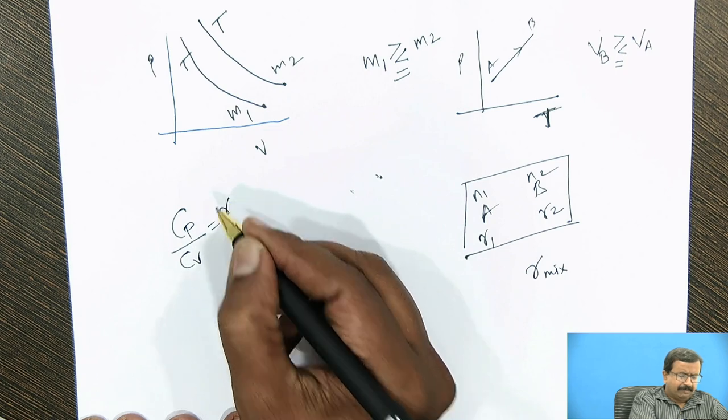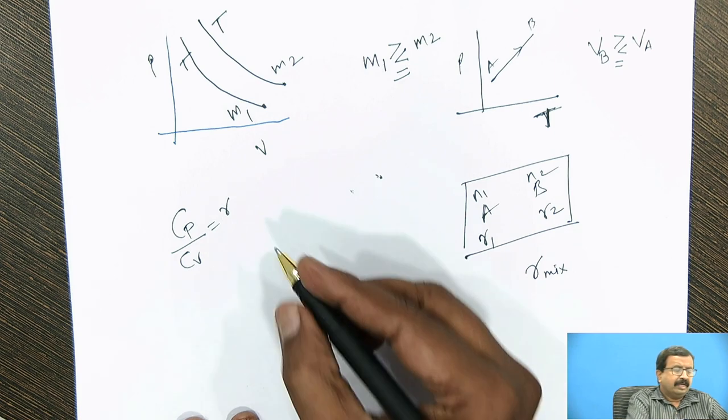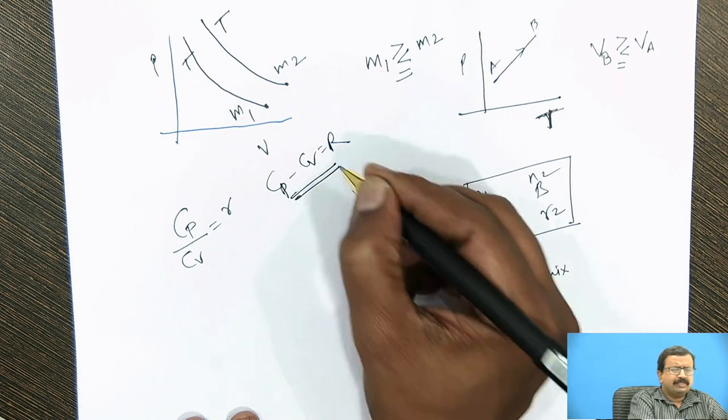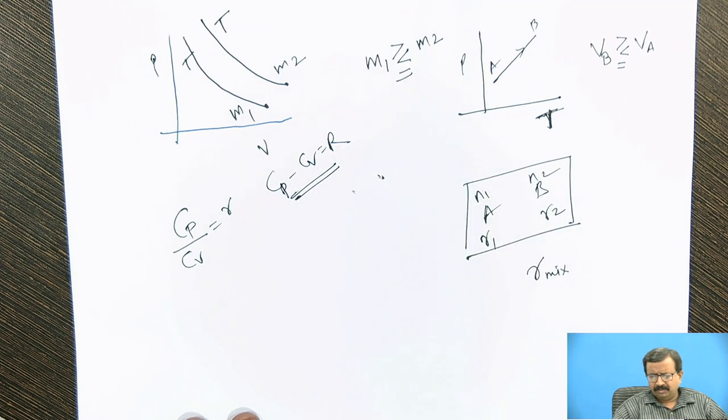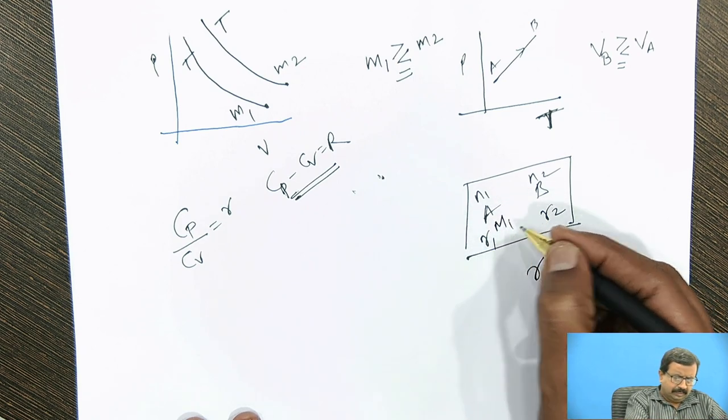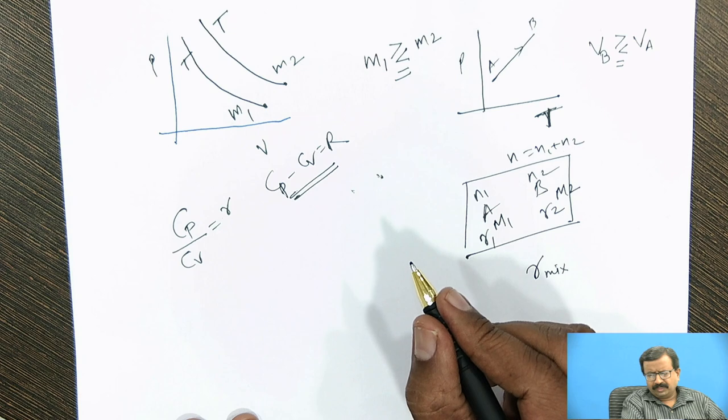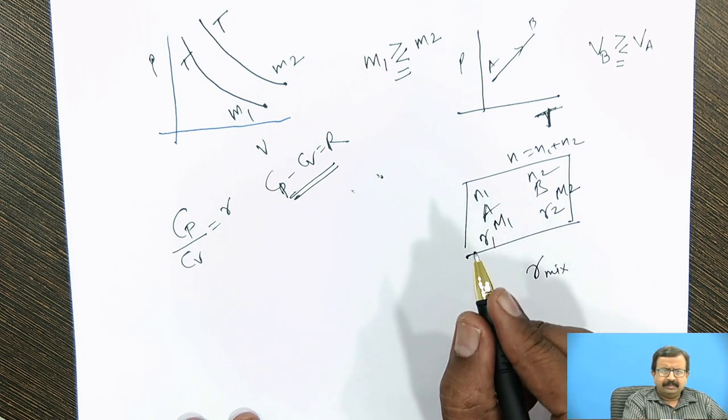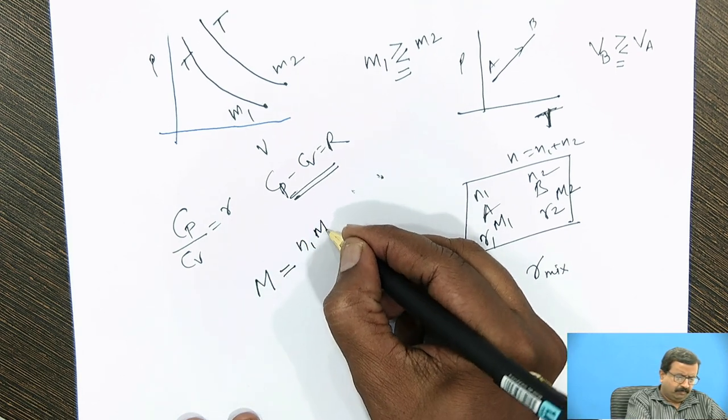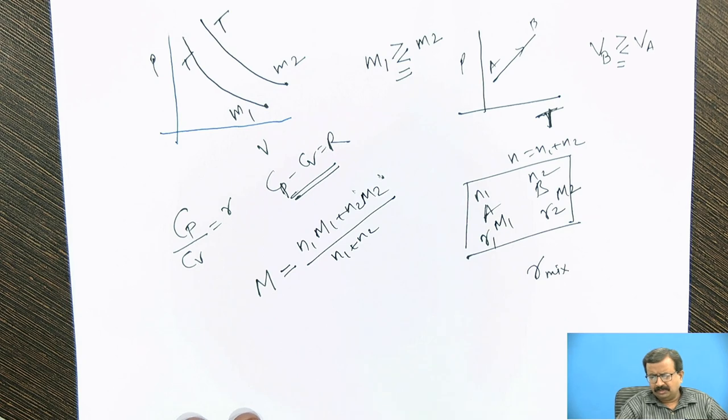For that, we require two things. One is Cp/Cv equals gamma. Cp/Cv is always gamma, it is the adiabatic index. Cp/Cv is never N. N is a very different parameter in thermodynamics. And another we have Cp minus Cv equals R, which is always true whether your gas is monatomic, diatomic, or polyatomic. Now, if the molecular weight of the first gas is M1 and second gas is M2, and N is the total number of moles N1 plus N2, then the molecular weight of the mixture will be equal to N1M1 plus N2M2 divided by N1 plus N2. This is from chemistry, using Dalton's law.